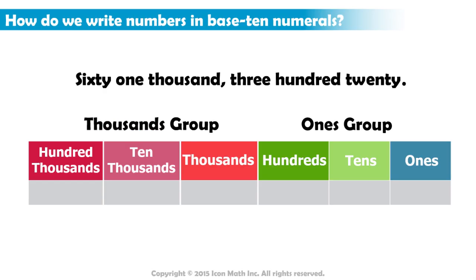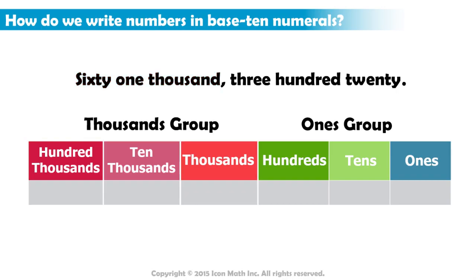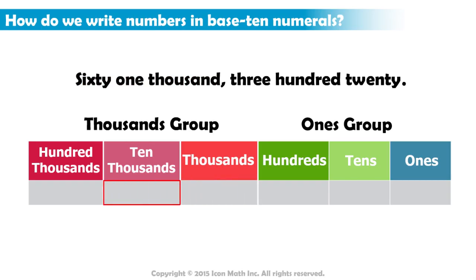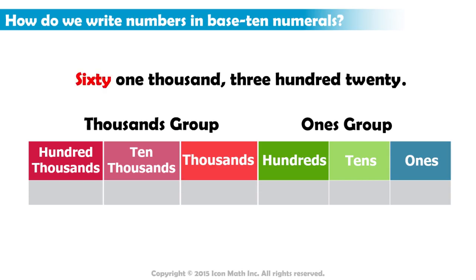To write our number in base 10 numerals, we have to start from the left. We read 61,000. 'Thousand' means that the number 61 is in the thousands group. It is called the thousands group because it can have digits in the thousands place, the ten-thousands place, and the hundred-thousands place. So on the place value chart, we write the six in the ten-thousands place and the one in the thousands place.